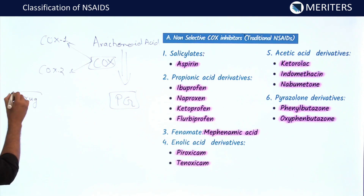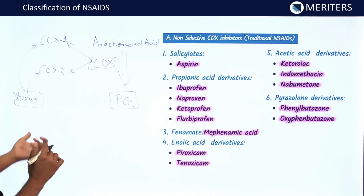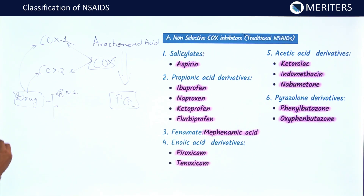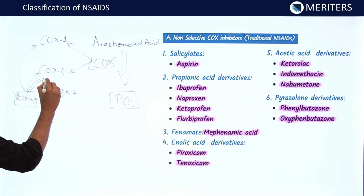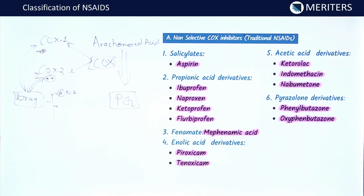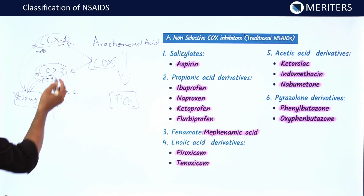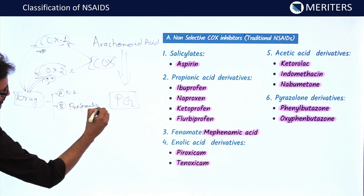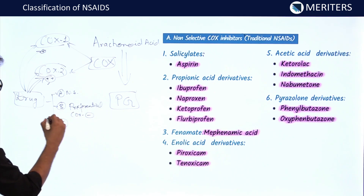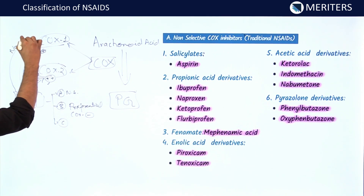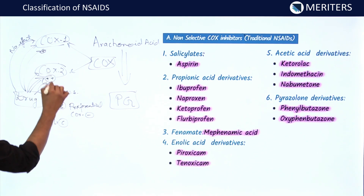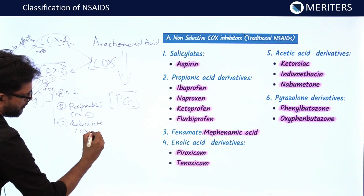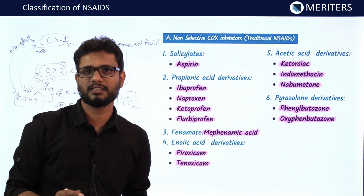Suppose a drug has equal effect on both COX-1 and COX-2 enzymes — that drug is known as a non-selective COX inhibitor. Then we have drugs which have more effect on COX-2 and less on COX-1 — these are called preferential COX-2 inhibitors. Finally, drugs with no effect on COX-1 and effect only on COX-2 are known as selective COX-2 inhibitors.